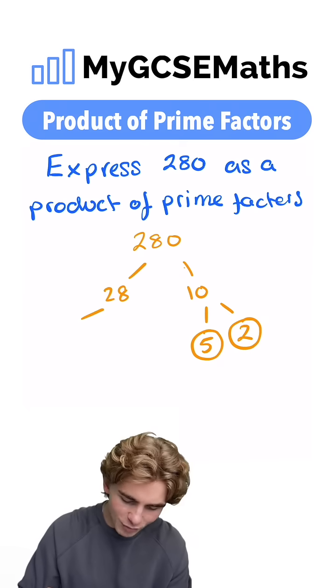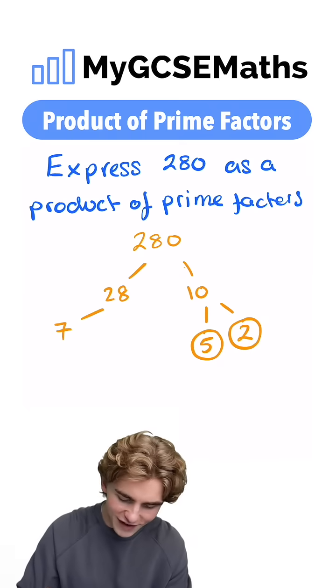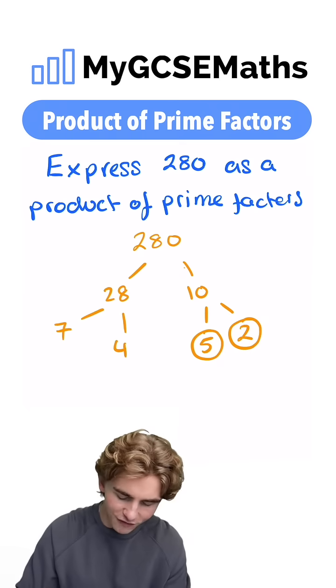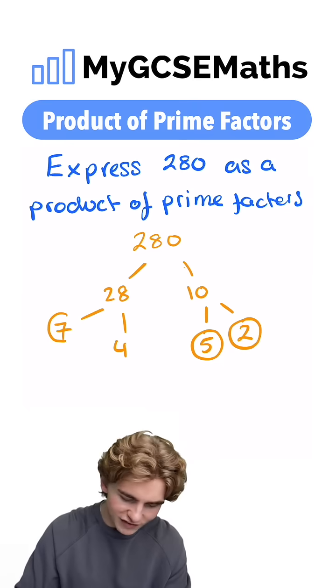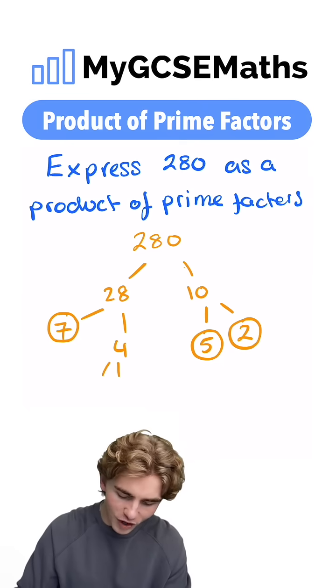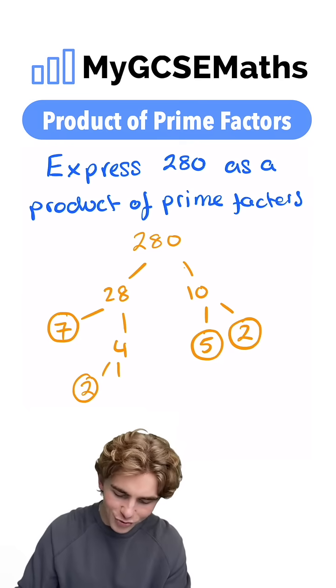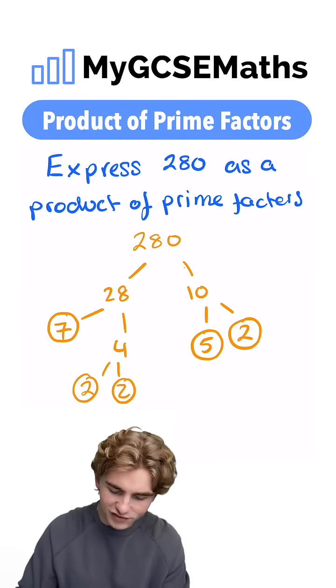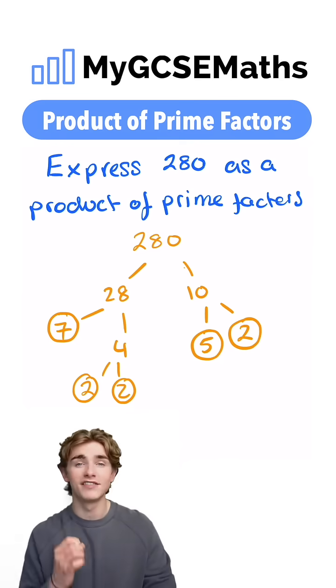And 28 can be broken down into 7 multiplied by 4. Circle 7 because it's prime, and finally 4 can be written as 2 times by 2. Circle them both because they're prime.